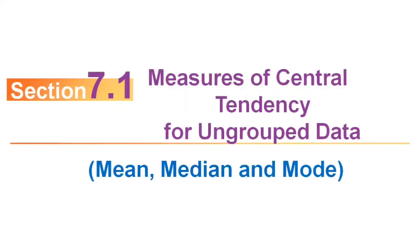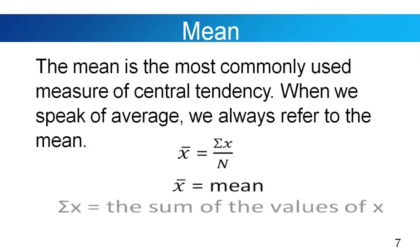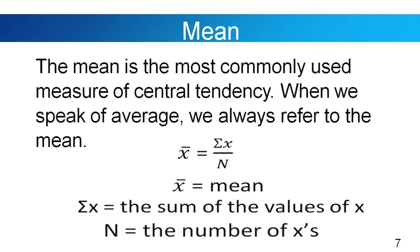Now we are going to discuss the measures of central tendency for the ungrouped data. We have mean, median, and mode. The mean is the most commonly used measure of central tendency. When we speak of average, we always refer to the mean. We use the formula: x̄ = Σx / n, where x̄ is the mean, Σx is the sum of all values, and n is the number of values.